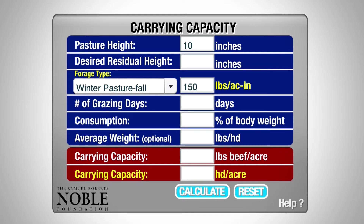We'd like to allow for about three inches residual because we're not going to graze it completely. We've already determined that our pounds per acre inch is adequate and we go on to the number of grazing days.